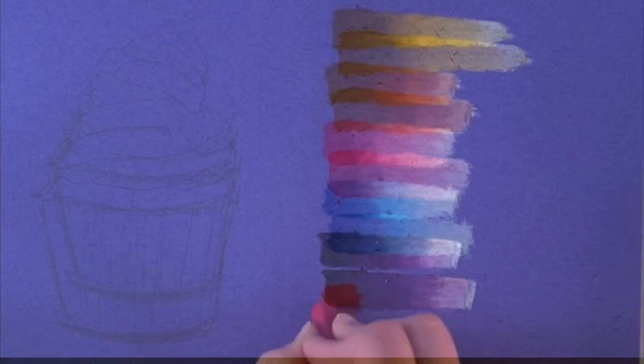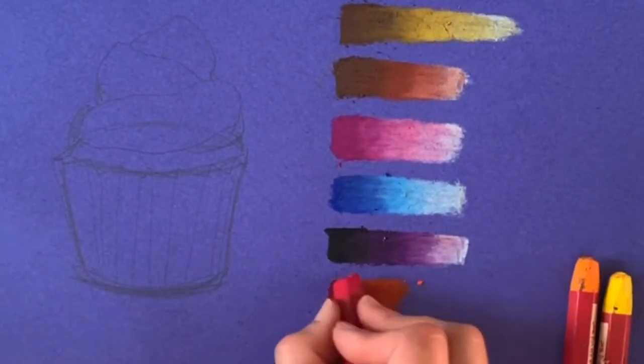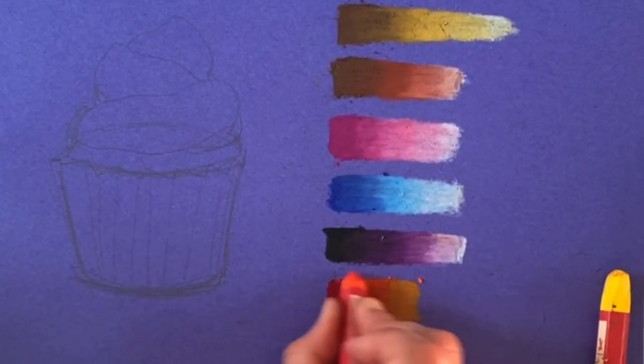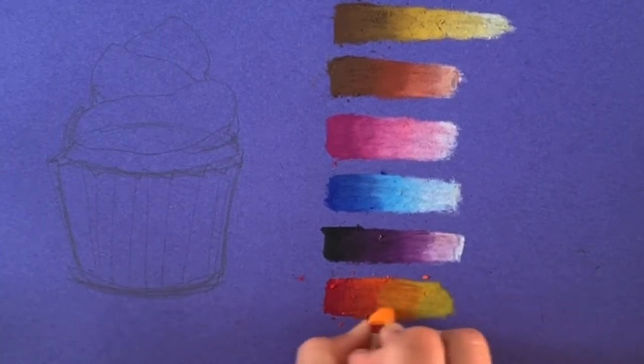To make something look even more 3D, you can use more than just three colors. For this one I'm using red, dark orange, light orange, yellow, and white. So five colors total to create a gradient with an even wider range of values.